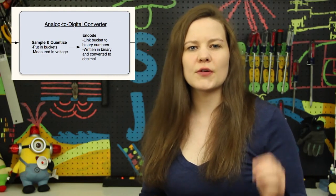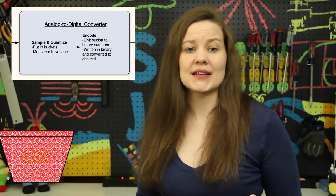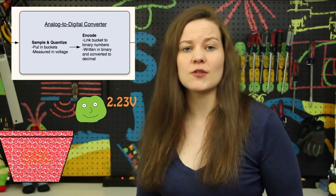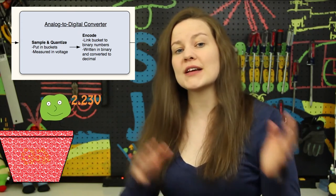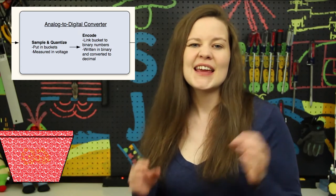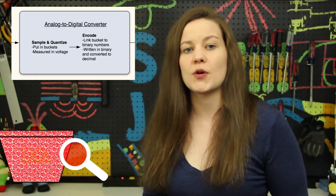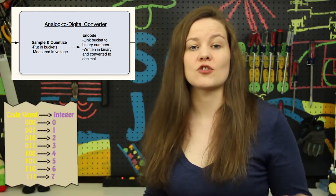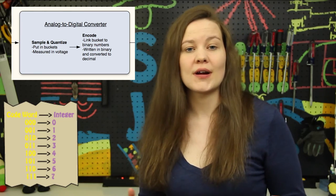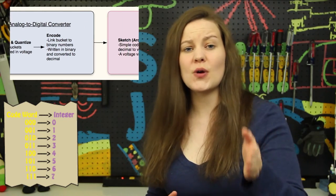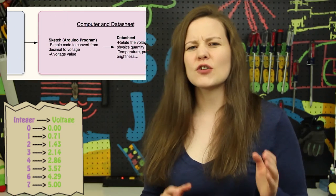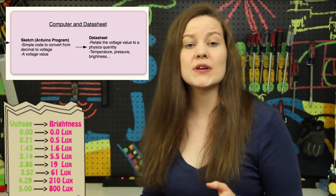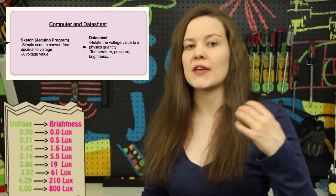The analog to digital converter is going to create voltage buckets. The computer samples the incoming analog signal and then places it into one of these buckets. Each of the buckets is associated with a codeword, and this is linked to an integer or whole number. This integer is told to you and to the computer.